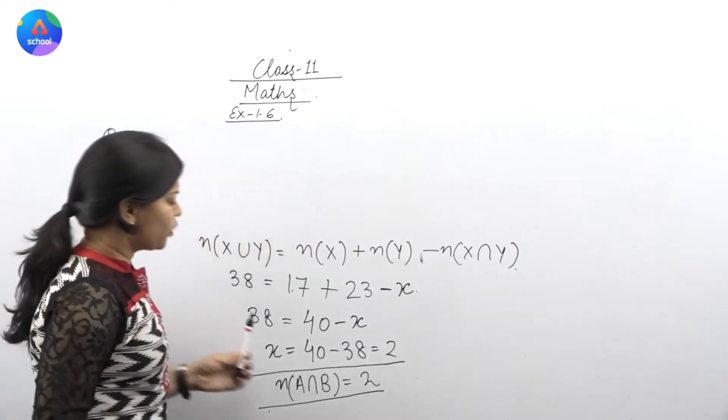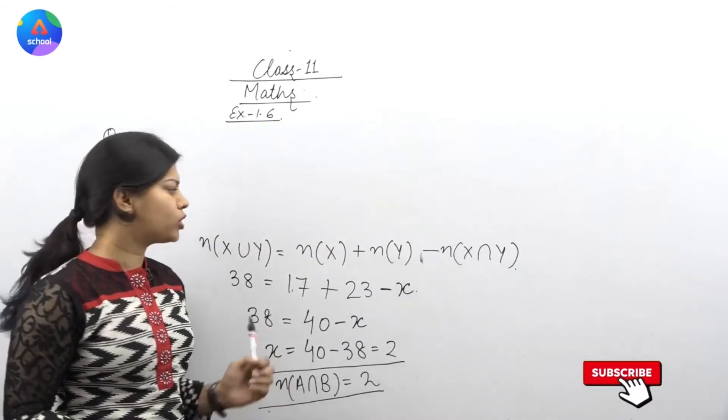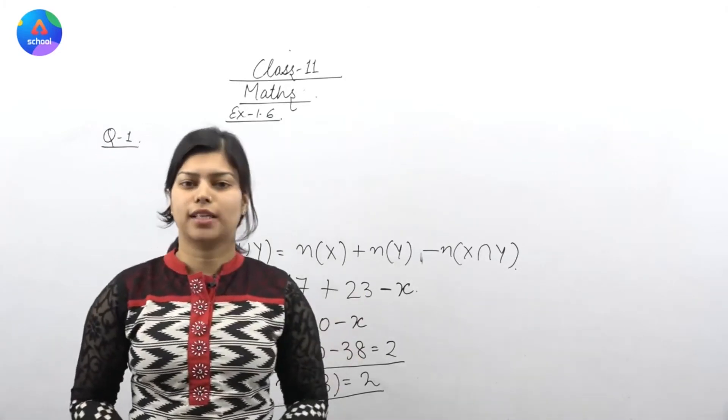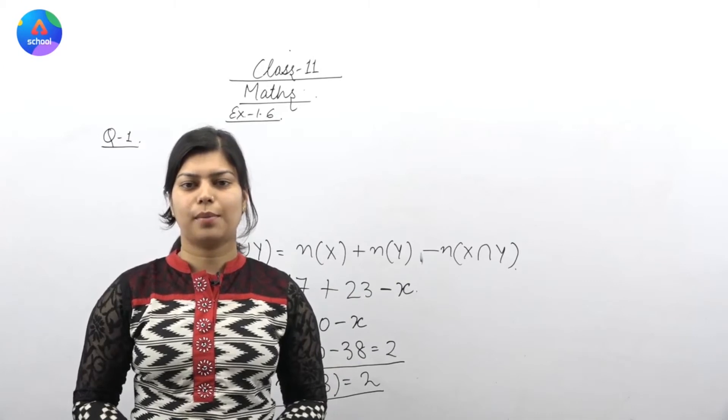So we used this and we put all values. And after that we found the value of n of X intersection Y. Then you come out of question number one.